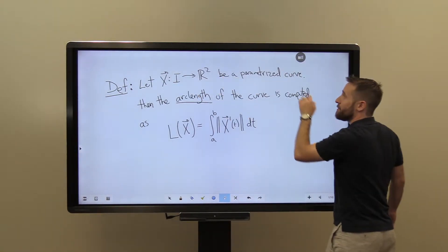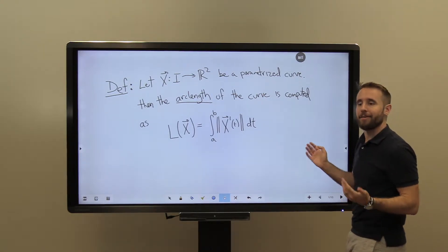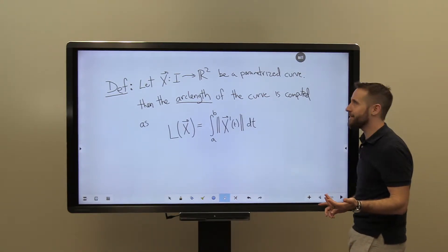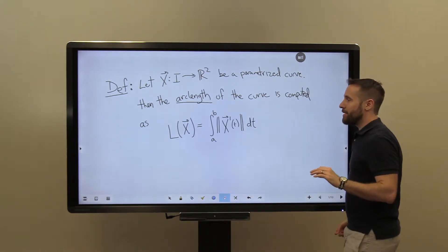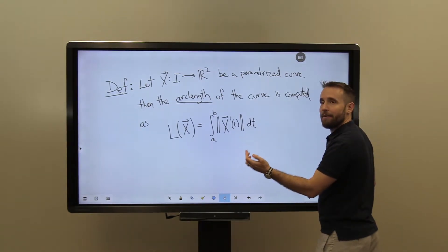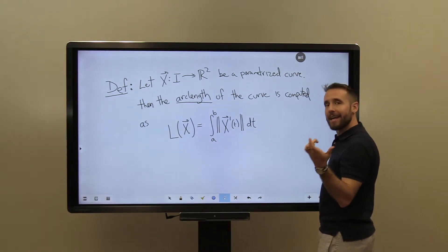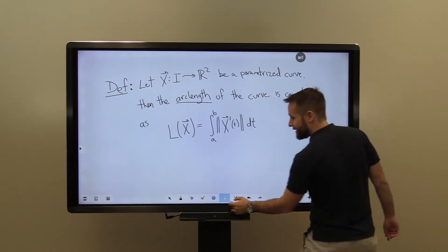So more formally, let x be a parametrized curve in parentheses with nothing funky happening. So a parametrized curve that's not tracing back over its steps. Then the arc length of the curve is simply going to be computed using this integral, where we're integrating up from the endpoints of time, a to b, the speed, x prime of t dt.